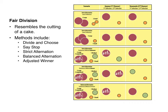Next we have strict alternation, coupled with balanced alternation. In strict alternation, heterogeneous assets can sometimes be divided fairly by taking turns. This works particularly well when there's not an odd number of items with particularly high or low value, and when the parties' knowledge of each other's preferences cannot lead to an unfair advantage.